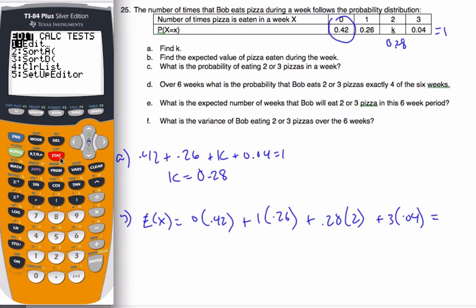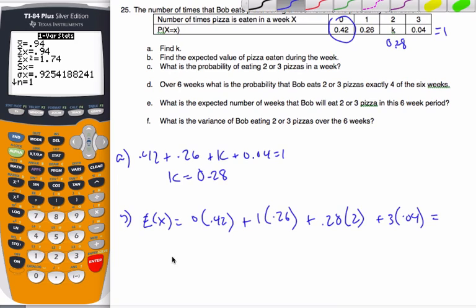When I go then to stat, to calculate one variable statistics, my list L1 is the number of pizzas eaten, my frequency list is the probabilities, and then I calculate that, and I have this, and so my expected value is the x-bar. And so my expected value is equal to 0.94 pizzas.